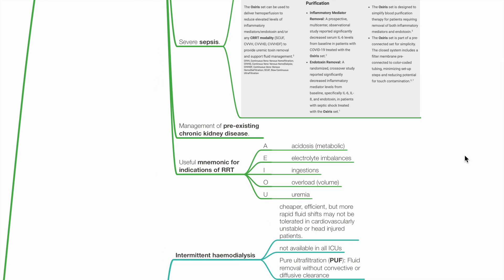A useful mnemonic to help remember indications for RRT is AEIOU, where A stands for acidosis, E for electrolyte imbalances, I for ingestions, O for overload and U for uremia.